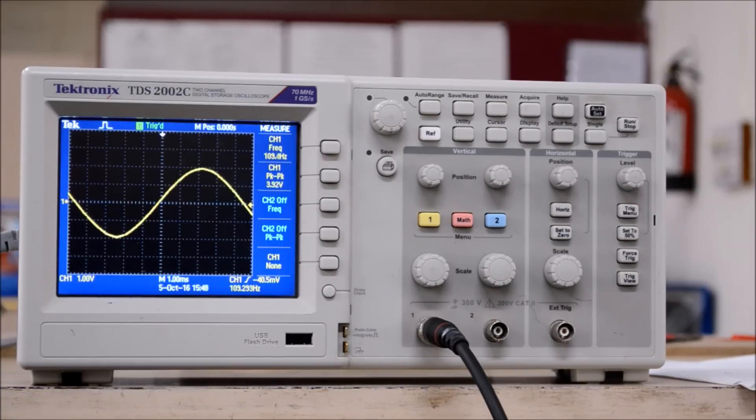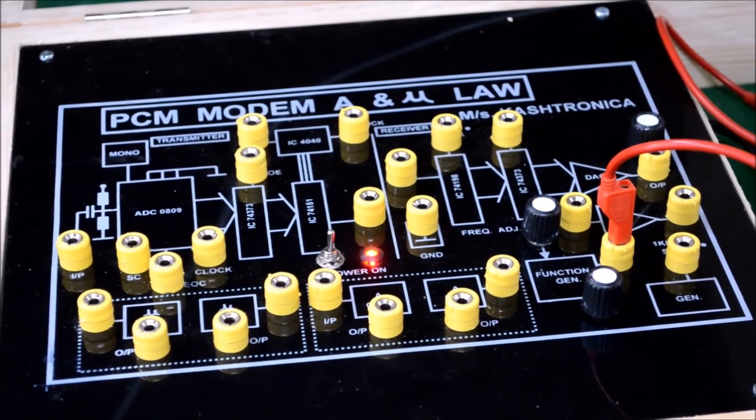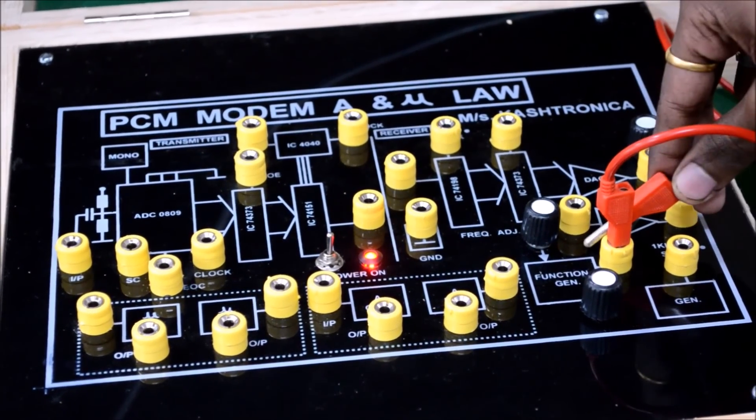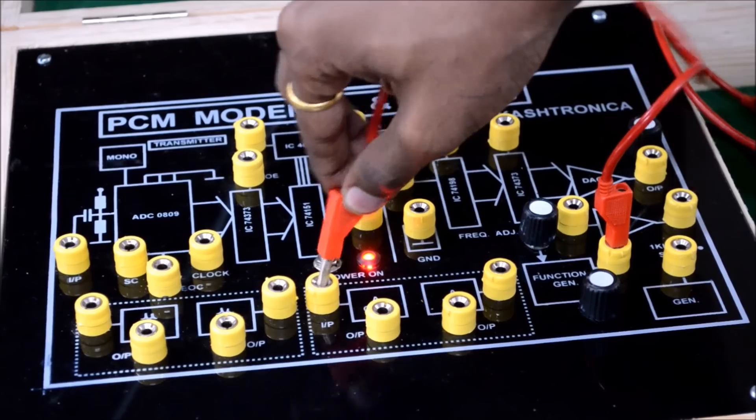In this experiment, we need to vary the voltage from 0V to 1V. So, which can be done using the amplitude adjustment port. Now, I will be connecting the input of function generator to the input of ALO compressor.